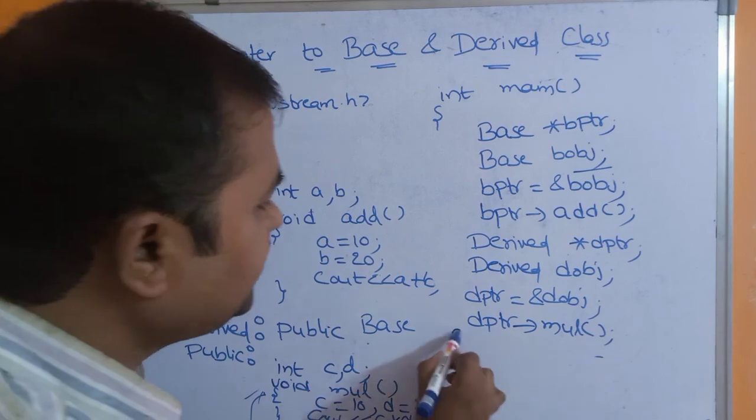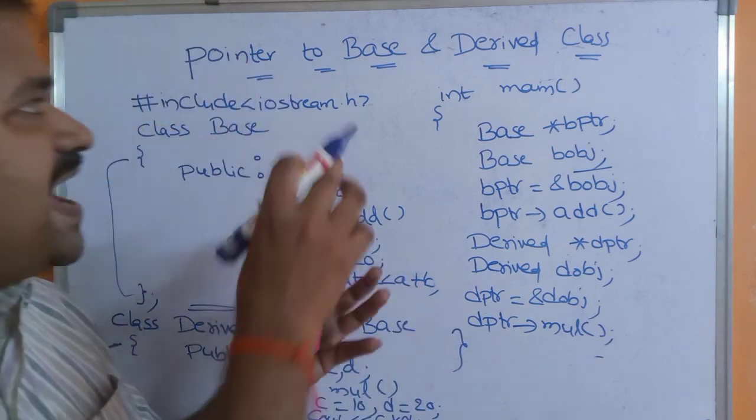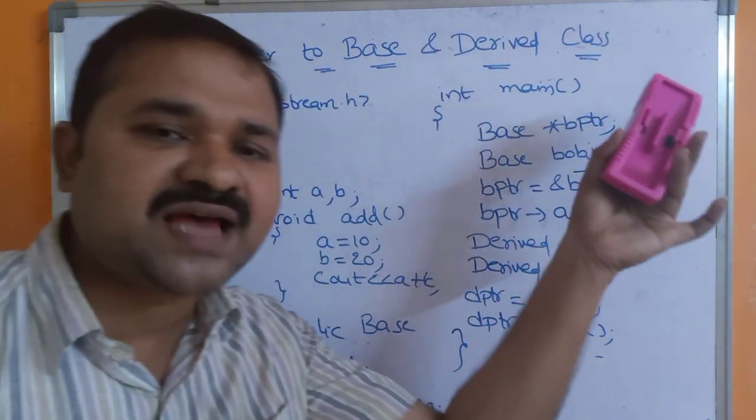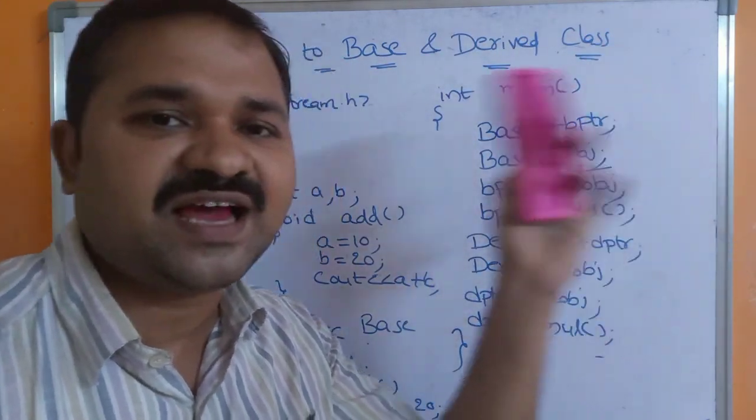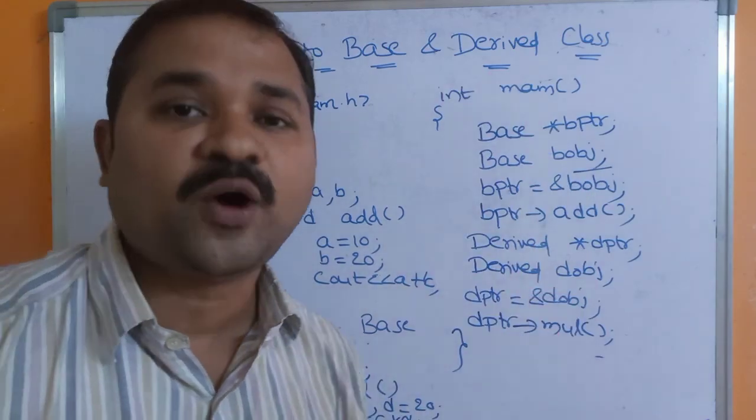So in this way we can access base class members and derived class members with the help of pointer variables.